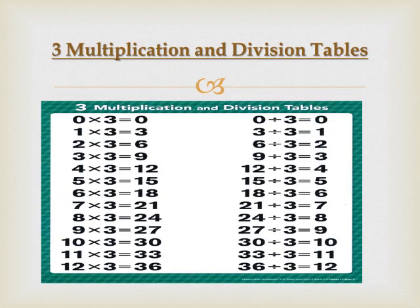First of all, we will revise the 3 times table and the division table of 3. Whenever you multiply any number with 0, the answer will always be 0. And when 0 is divided by any number, its answer is also 0.